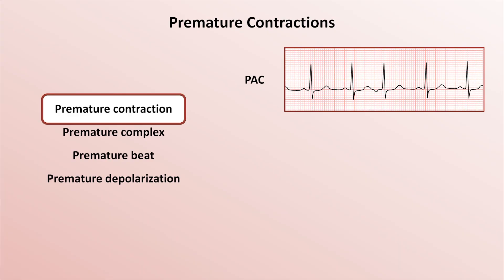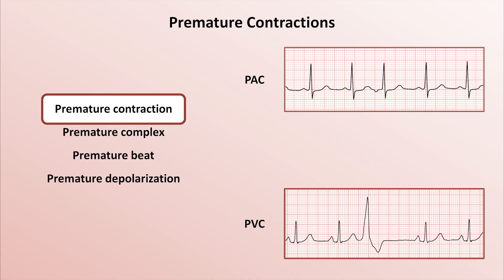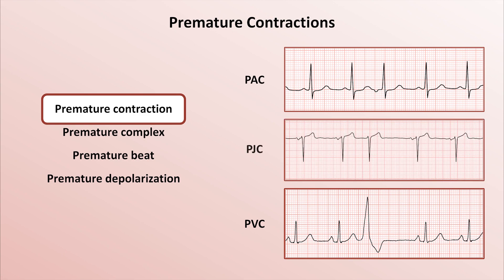Premature contractions are not isolated to the atria. They also occur in the ventricles, where they are more easily identified on EKG due to their wide and bizarre QRS morphology, usually followed by an unusually large T-wave of opposite polarity to the QRS. In addition to PACs and PVCs, there are also PJCs, or premature junctional contractions, which refer to spontaneous premature depolarization in the region of the AV node. The term PJC highlights the inaccuracy of calling these phenomena premature contractions, because of course the AV node has nothing to contract — but PJC is still the most common term.